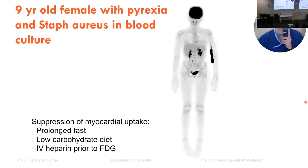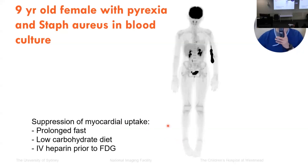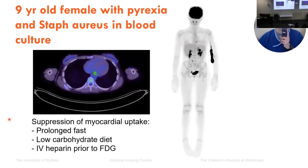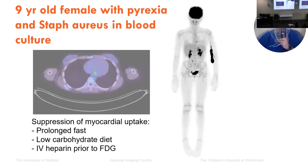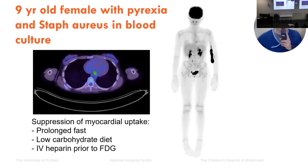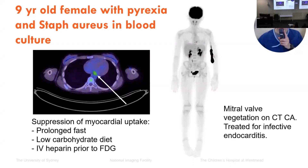The next patient is a nine-year-old female with pyrexia and positive blood cultures growing Staph aureus. She underwent an FDG PET-CT scan utilising measures to suppress mitochondrial activity, involving a prolonged fast, low-carbohydrate diet and IV heparin prior to the FDG injection. The FDG scan shows some trace adhering to the central line, but there's also a focus centrally within the thorax. The focal uptake in the thorax on the axial was confirmed to lie near the base of the heart, and further imaging confirmed a mitral valve vegetation. Following treatment for infective endocarditis, the patient recovered.